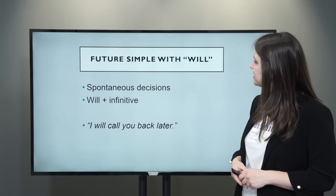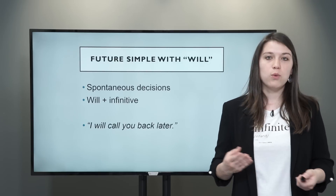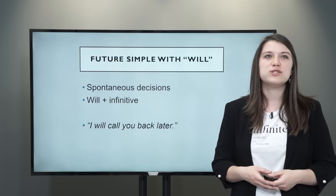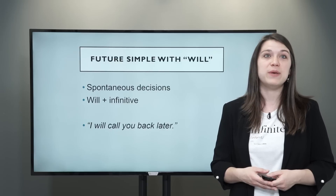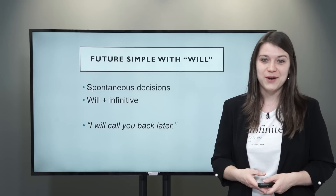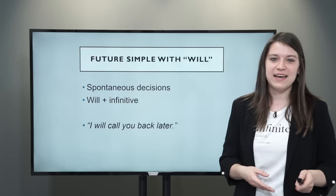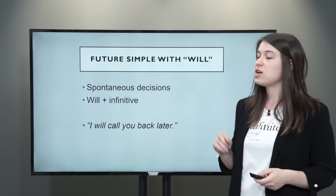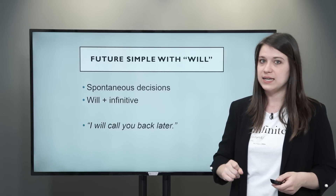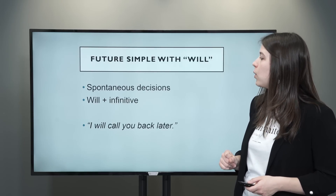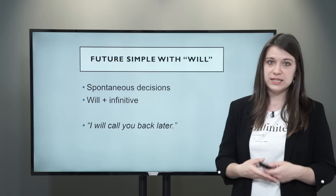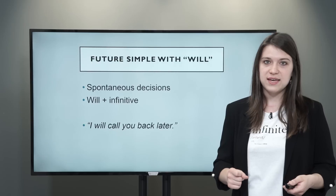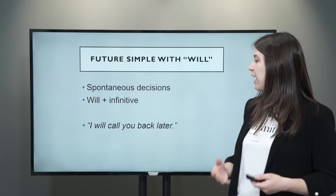Now we just have to finish by reviewing the future tense. Our first future tense is the future simple with will — there are two different ways to form the future simple. We use the future simple with will to talk about spontaneous decisions, things that you decide spur of the moment. We use will plus the infinitive. For example: I will call you back later — this is if someone calls you and you're busy, then you decide right then to call them back.